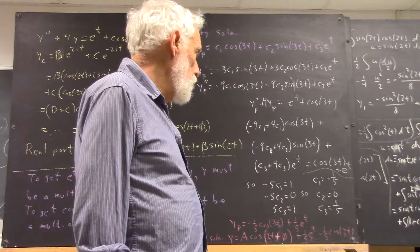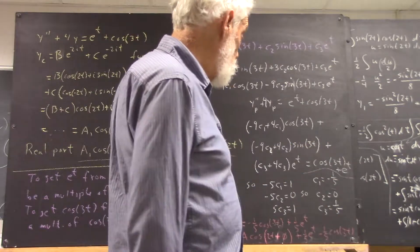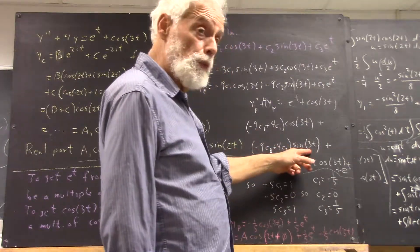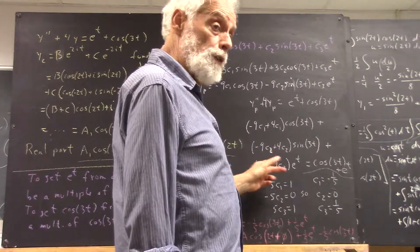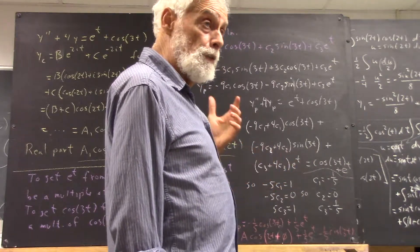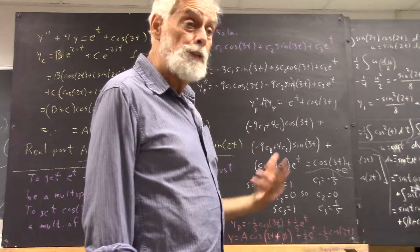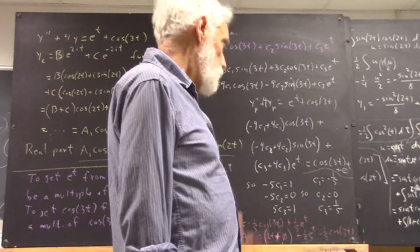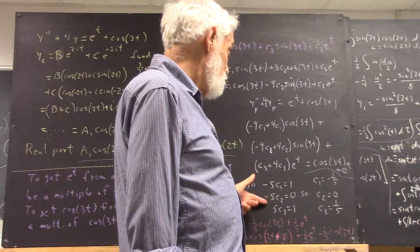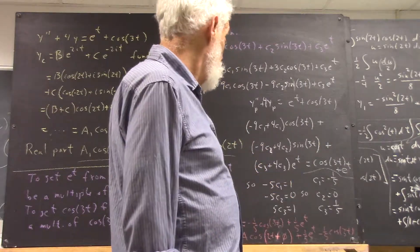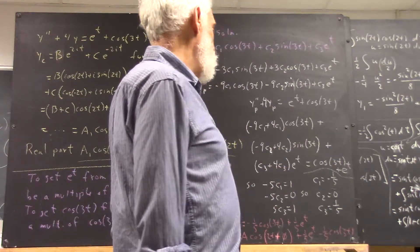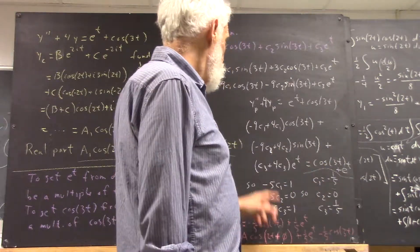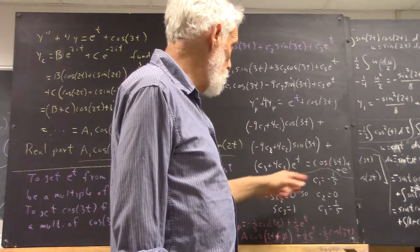There's no sine of 3t over here, so whatever is in front of sine of 3t has to be 0. In this case, both of these coefficients are multiples of c2, so c2 has to equal 0. Then c3 plus 4c3 e to the t has to be e to the t. That's 5c3 e to the t has to equal e to the t, so 5c3 has to equal 1, and c3 is 1/5.